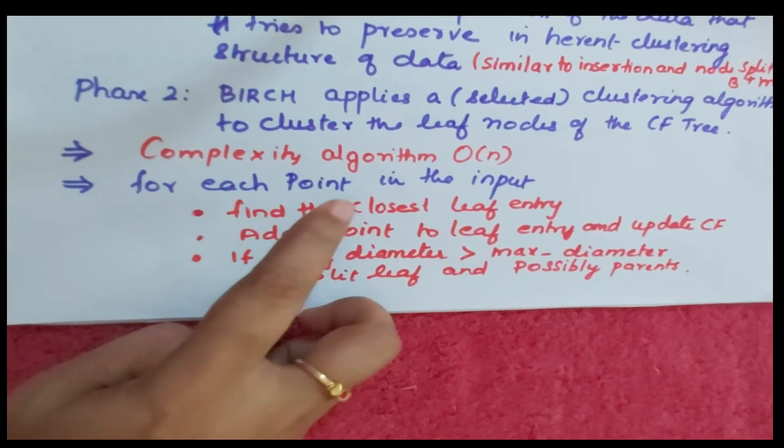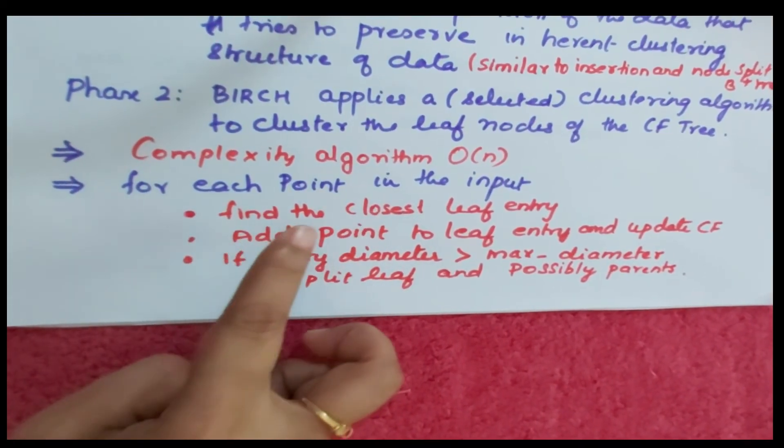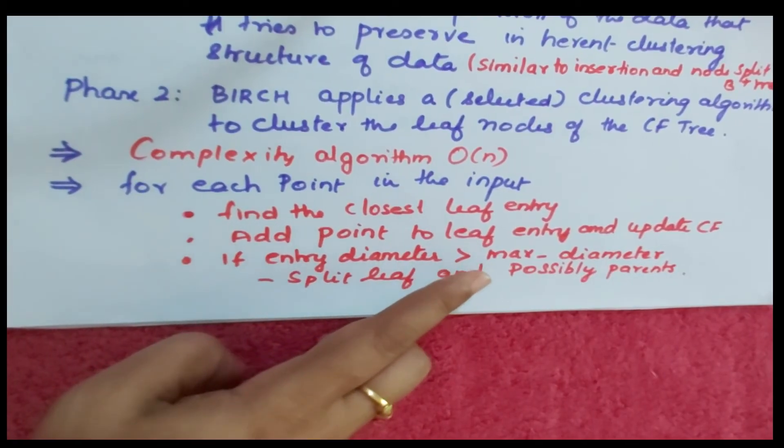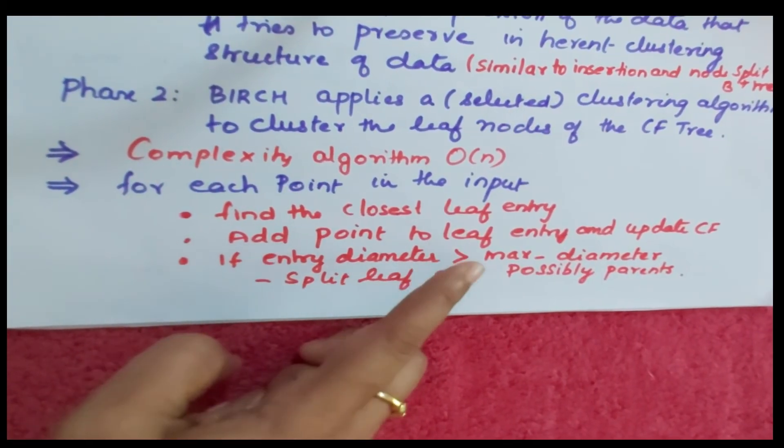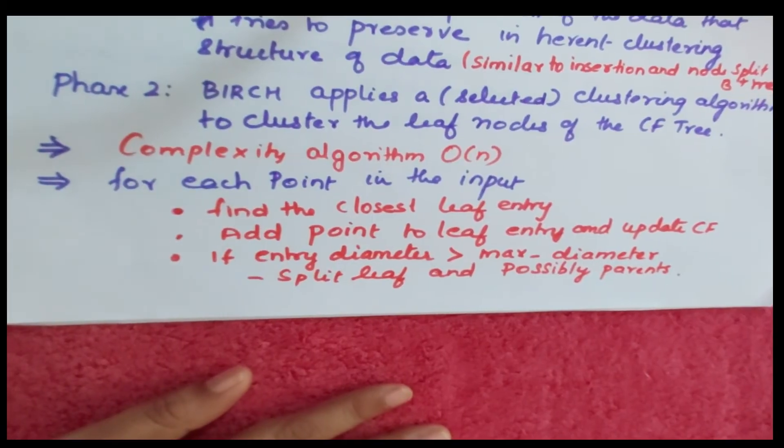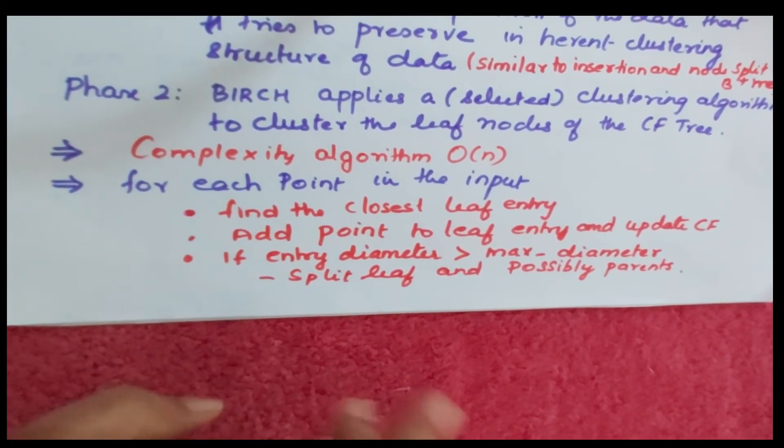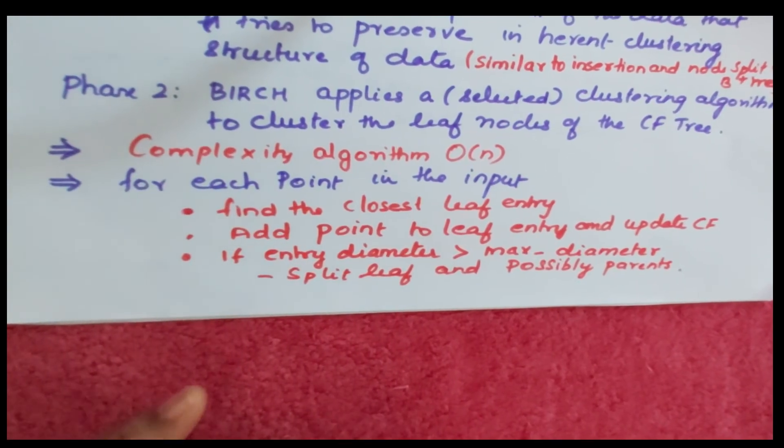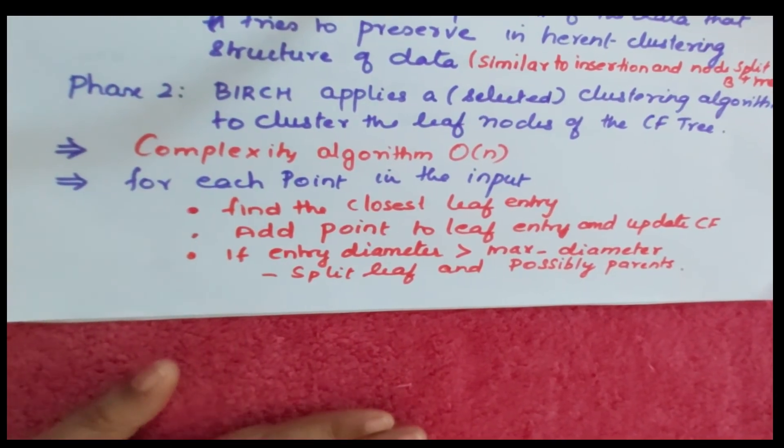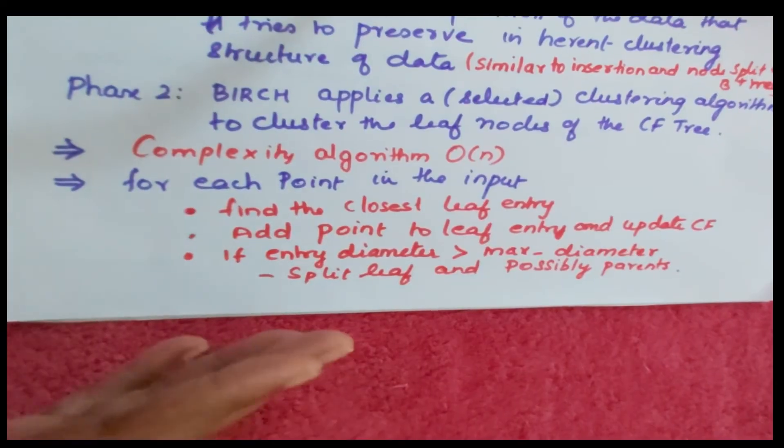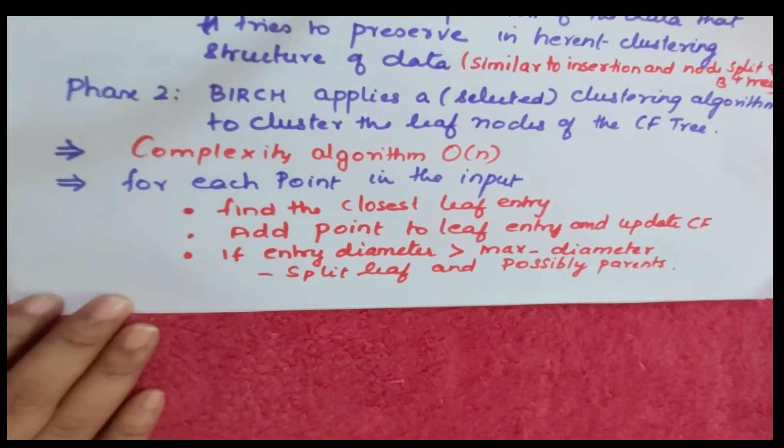Let me summarize the algorithm. For each point in the input, first find the closest leaf entry, then add the point to the leaf entry and update the CF. If the entry diameter is greater than the maximum diameter, start splitting the leaf and even split the parents. This is the summary of the algorithm.